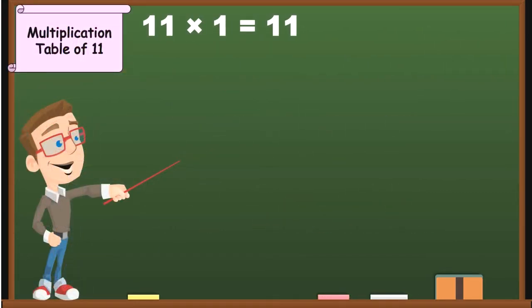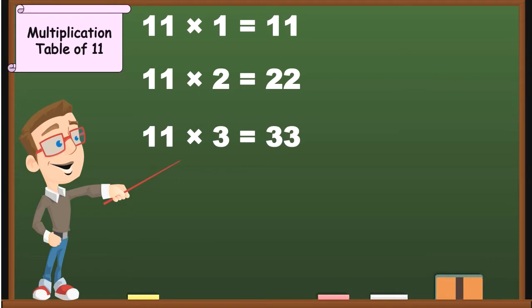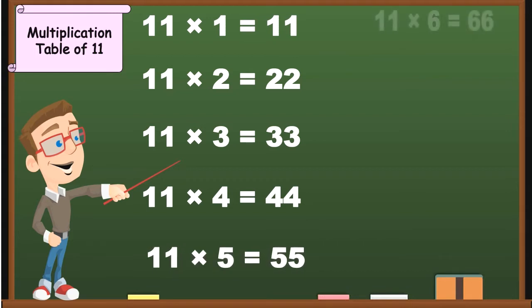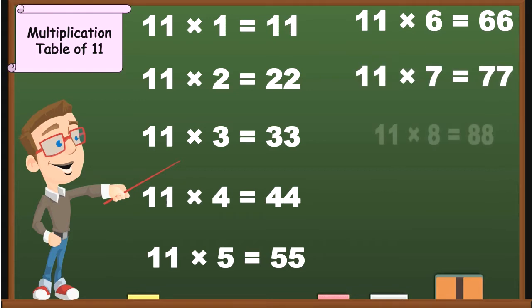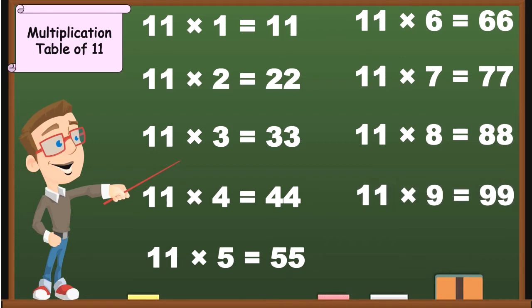11 1's are 11, 11 2's are 22, 11 3's are 33, 11 4's are 44, 11 5's are 55, 11 6's are 66, 11 7's are 77, 11 8's are 88, 11 9's are 99, 11 10's are 110.